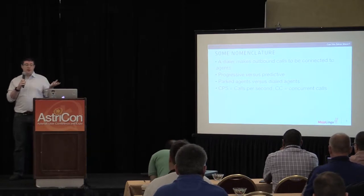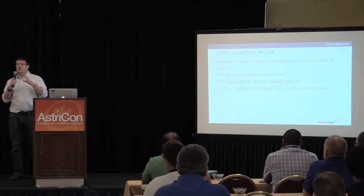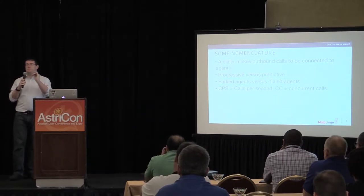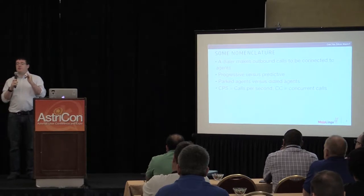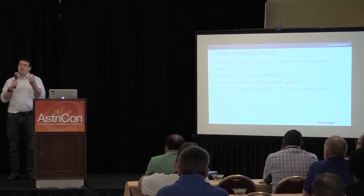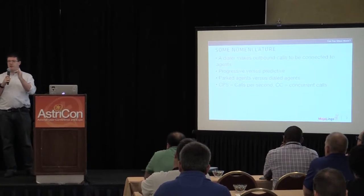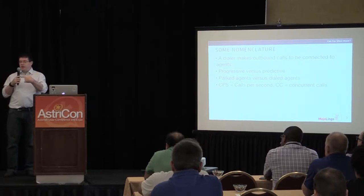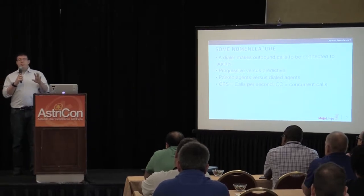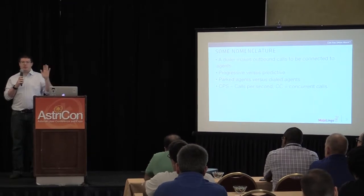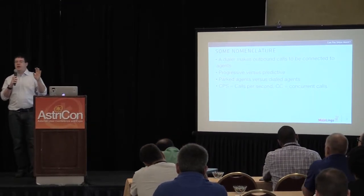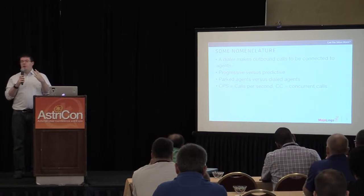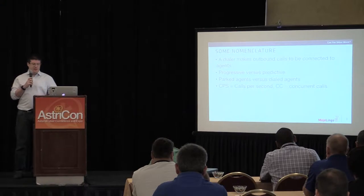Another difference is parked agents versus dialed agents. Parked agents means your agents are already in Asterisk — they dial in and wait on music on hold, and when a call comes in, you bridge them immediately. That's faster but uses more resources. Or you just dial the agent when a customer answers. Two important metrics: CPS (calls per second) — how many new calls are made every second — and CC (concurrent calls) — how many active calls exist at any given time.